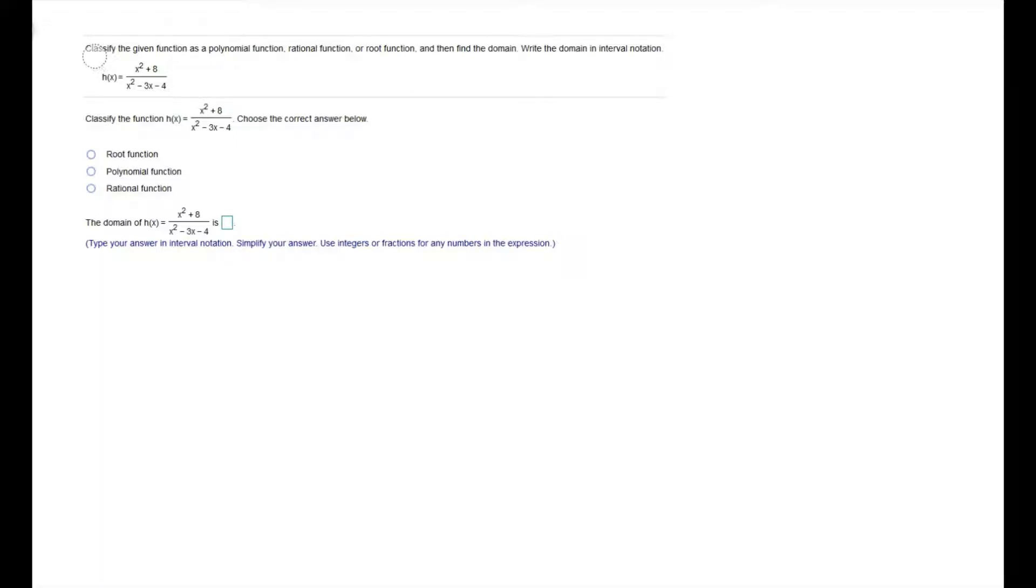The next example says classify the given function as polynomial, rational, or root, and then find the domain. Write the domain in interval notation. So this is the same directions as the last example, and this time we have h of x equals x squared plus 8 over x squared minus 3x minus 4.